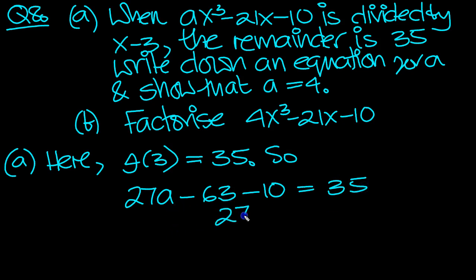So 27a, leave that as is. Move the 63 over and the 10 over, that's 73 plus 35. 35 plus 73. Tap that in the calculator if you need to, to get 108.